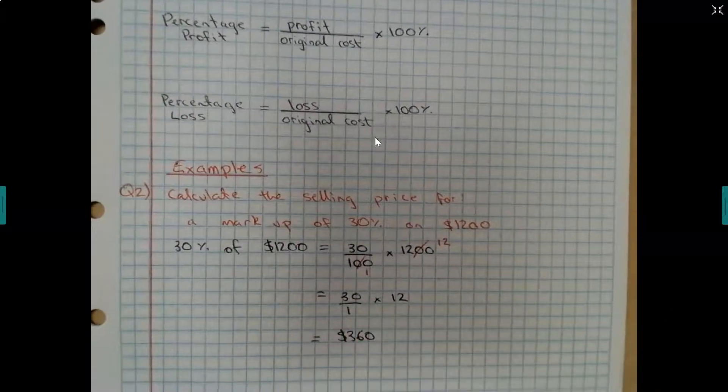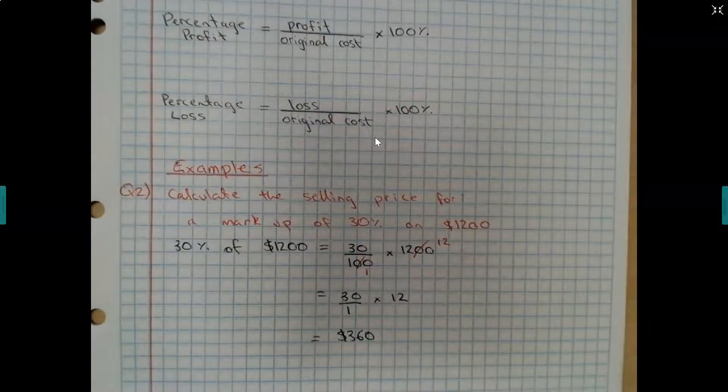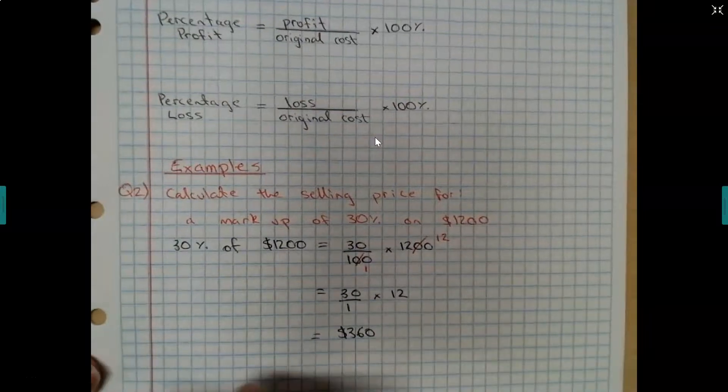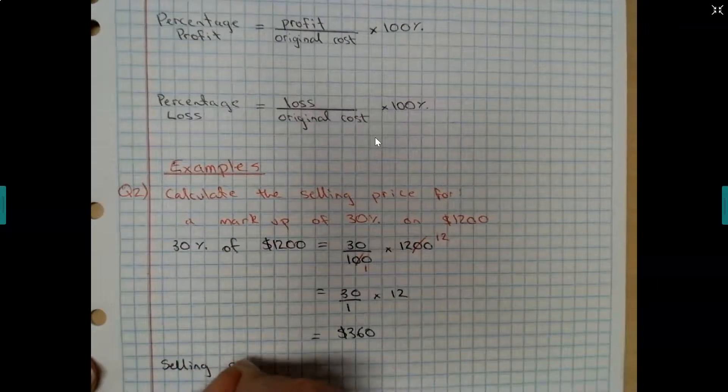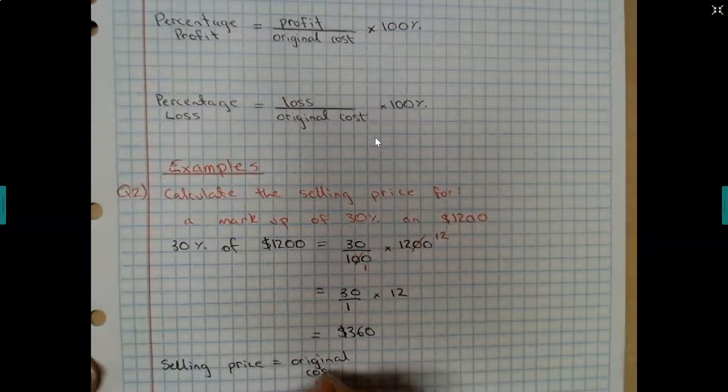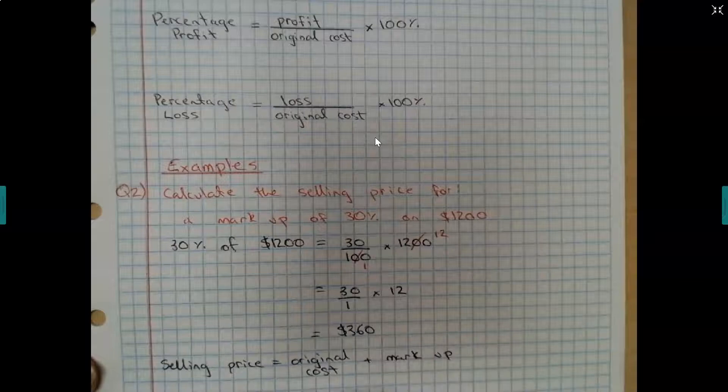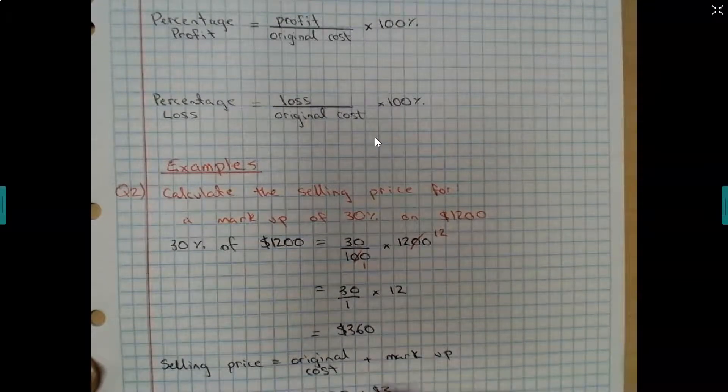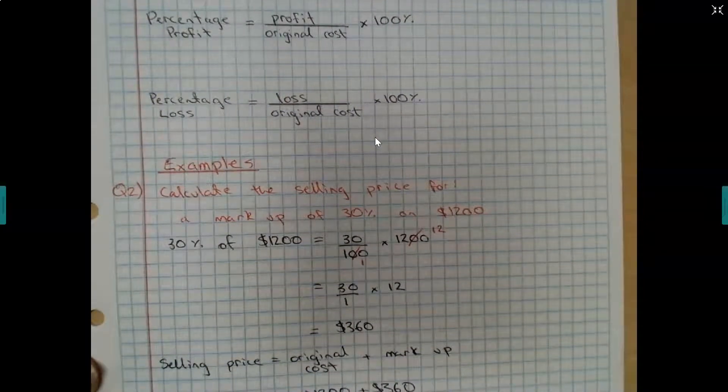All right. So my markup is $360. So what's my selling price going to be? It's going to be the original cost plus that markup. So selling price equals original cost plus markup, which is $1,200 plus $360, which is equal to $1,560.